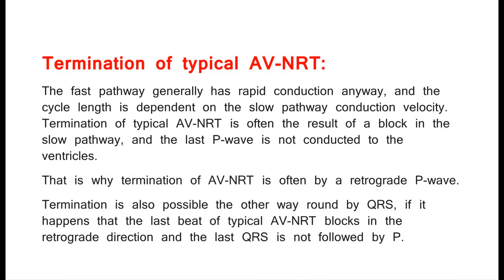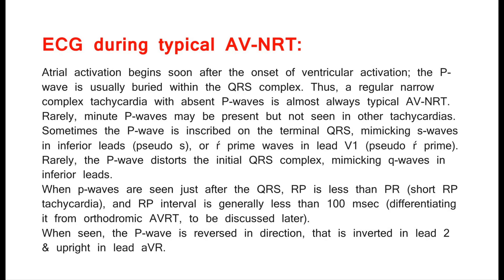Termination of typical AVNRT is often the result of a block in the slow pathway, and the last P-wave is not conducted to the ventricles — that is why termination of AVNRT is often by a retrograde P-wave. Termination is also possible in the other direction by QRS, if the last beat blocks in the retrograde direction. On the ECG during typical AVNRT, atrial activation begins soon after the onset of ventricular activation, so the P-wave is usually buried within the QRS complex. Thus, a regular narrow complex tachycardia with absent P-waves is almost always typical AVNRT.